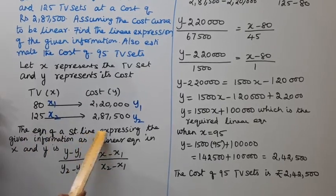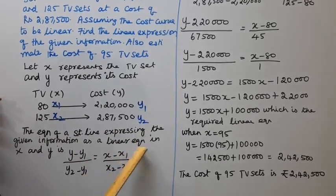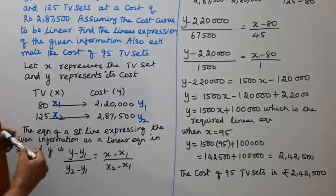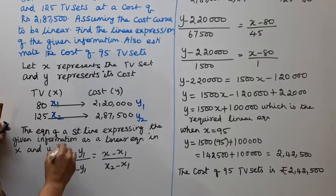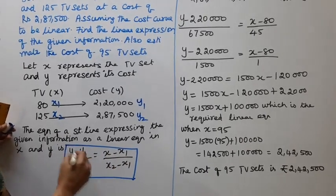Now we can use this formula and substitute these values. Y minus y1, y minus 2 lakh 20,000...